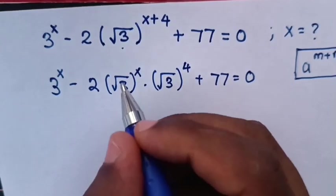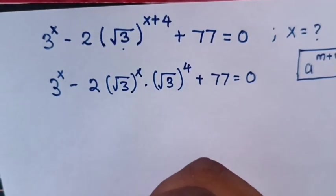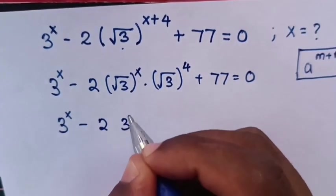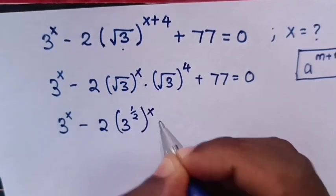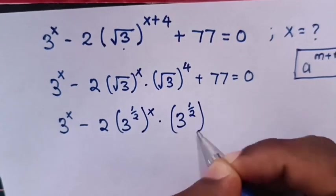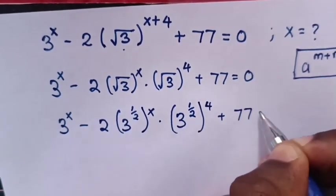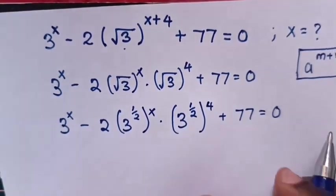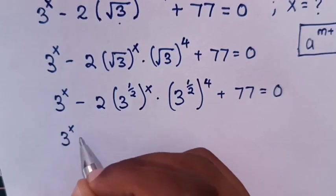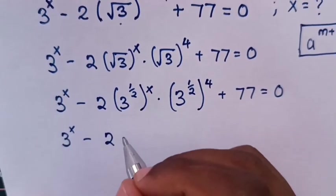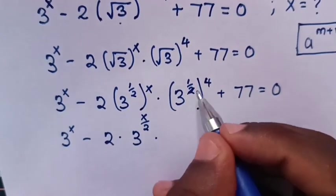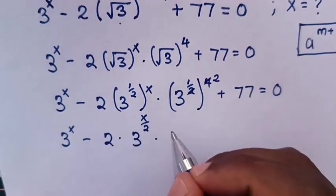The square root is the same as a power of one half, so our equation becomes 3^x minus 2 times 3^(1/2 · x) times 3^(1/2 · 4) plus 77 equals 0. Now we multiply the powers inside the bracket with the outside power, giving us 3^x minus 2 times 3^(x/2).